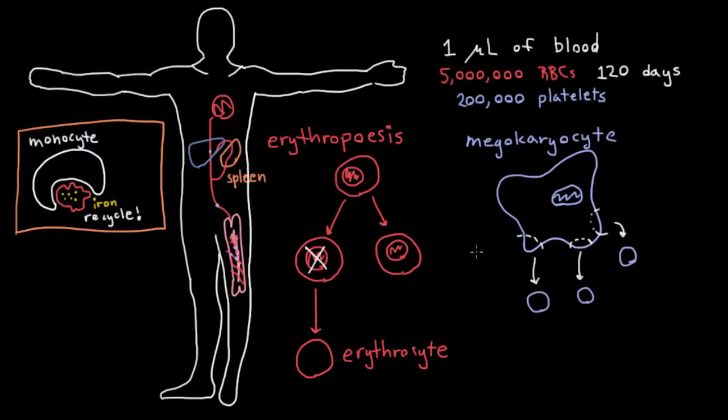Now how does your body know how many new red blood cells to make? Well to answer that question, let's go back to what is the primary purpose of red blood cells. Their primary purpose is to bring oxygen out to the different parts of the body. So if you don't have enough oxygen, if you don't have enough oxygen, that means that you probably don't have enough red blood cells.